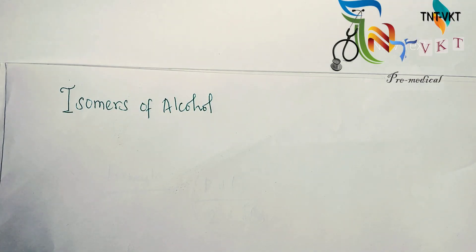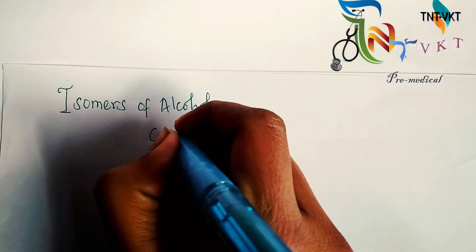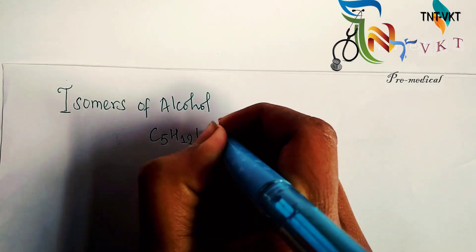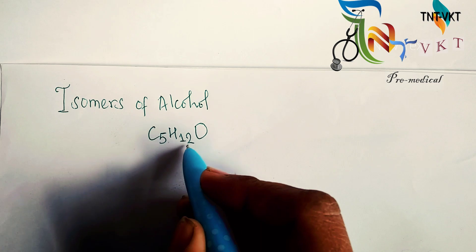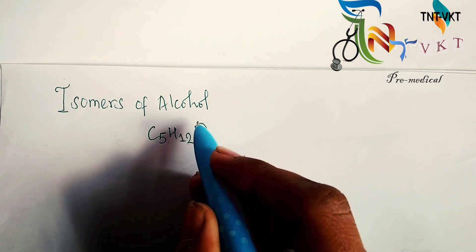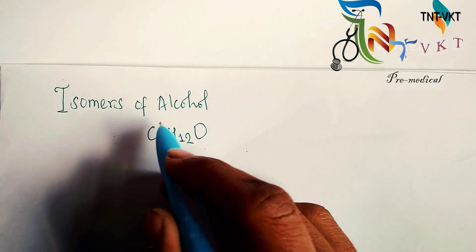Welcome to TNT PKT trick series. In this video we are going to find the isomers of alcohol. For example, if you are given C₅H₁₂O, this is alcohol because 5 to the 10 plus 2 is 12 and one oxygen. This means alcohol and ether, this is the formula for alcohol and ether.